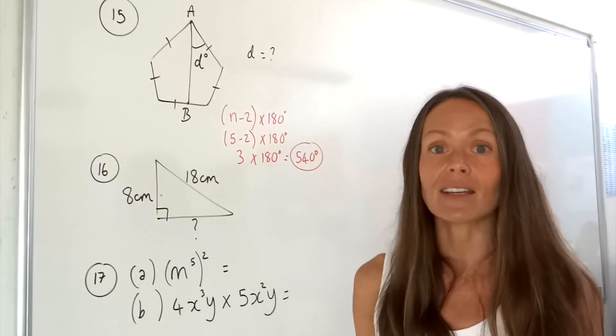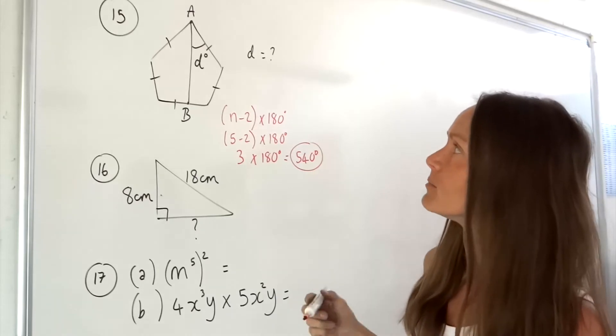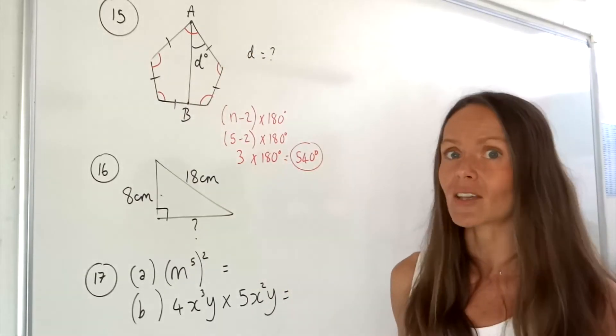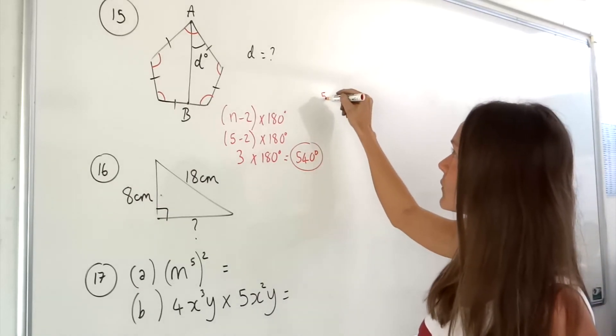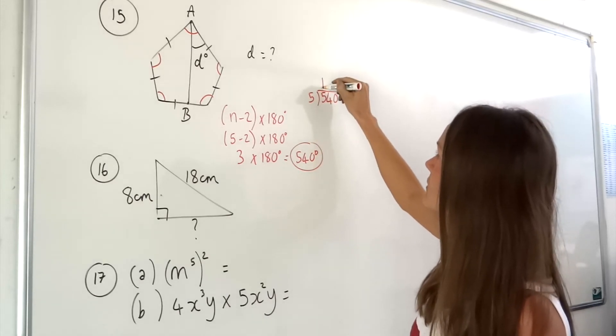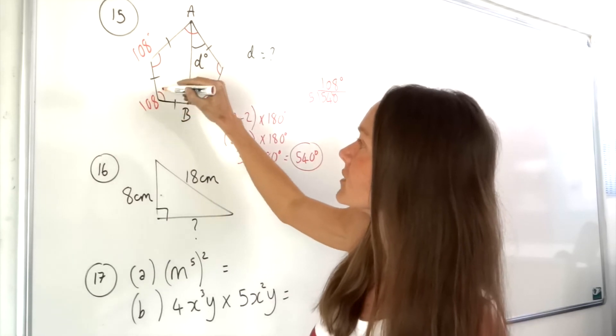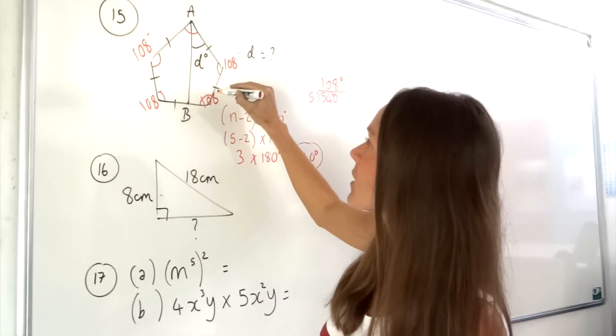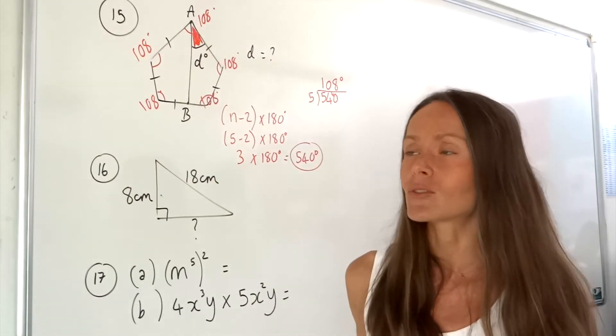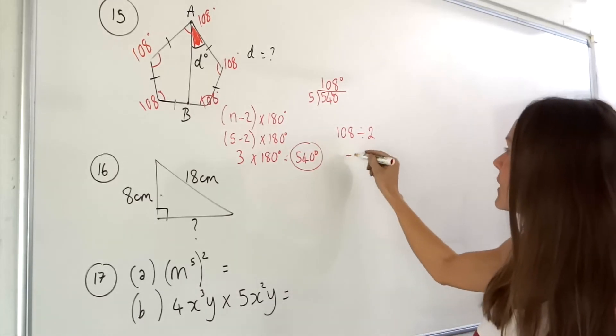All the angles inside any pentagon always add up to 540 degrees. Because it's a regular pentagon it means all of these angles are equal, they're all the same. From there we can work out what one angle is inside a regular pentagon. We can divide that number 540 by 5. Five into five goes once, five into four none carry the four, five into 40 goes eight. So all of these angles are 108 degrees. We have to work out the value of d and d is only half of one of those angles, so the final step is to divide that number 108 by 2, and if you do that you get 54 degrees.